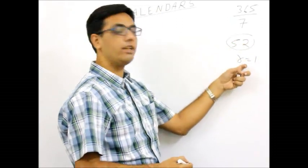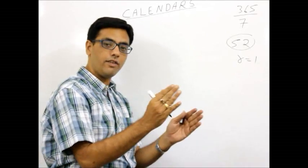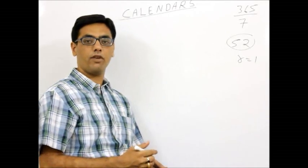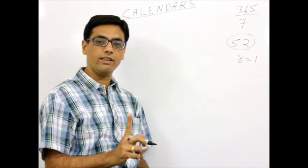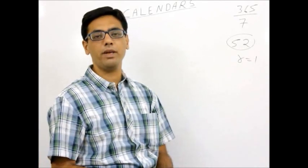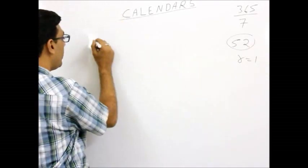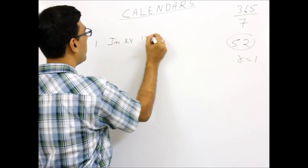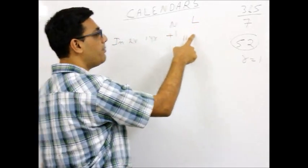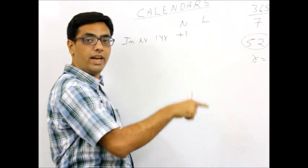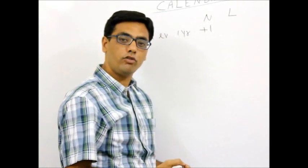So that's why we say 52 weeks and remainder 1 — 52 into 7 is 364. So in other words, if 1st of January is Sunday, after a cycle of 7 days the 364th day will come as Saturday, and the 365th day, which is the remainder, will again come as Sunday. So 1st of January is Sunday means 31st December will again be a Sunday, and therefore 1st January next year will become Monday. So this is Rule 1: in every 1 normal year, plus 1 day.